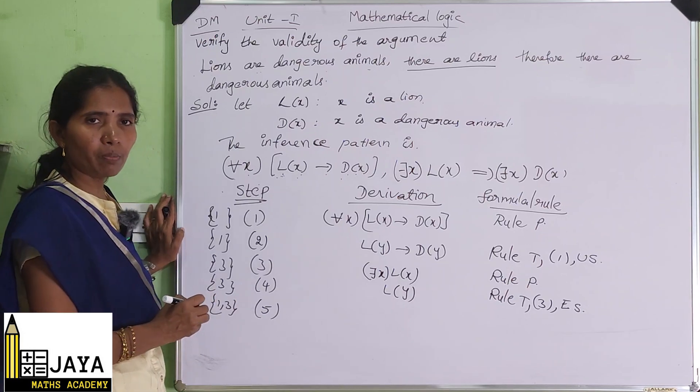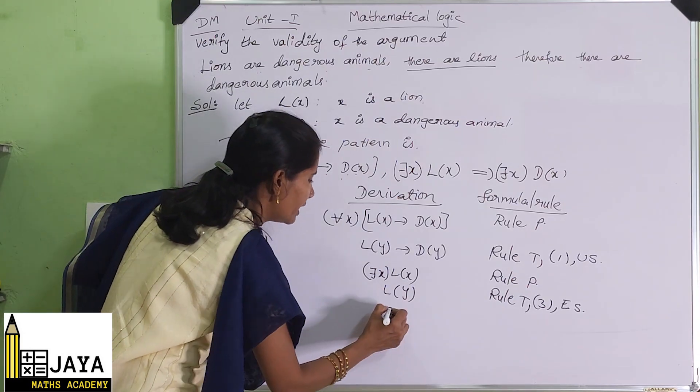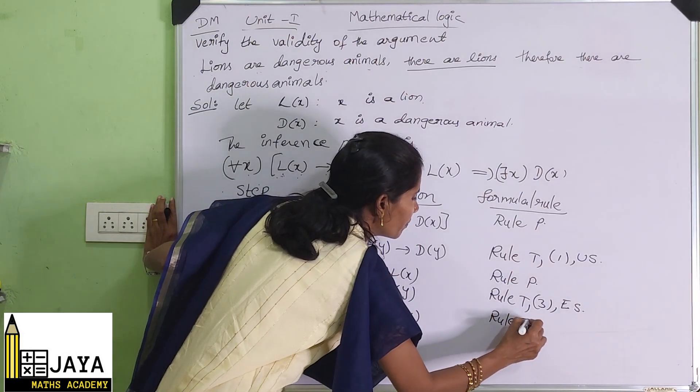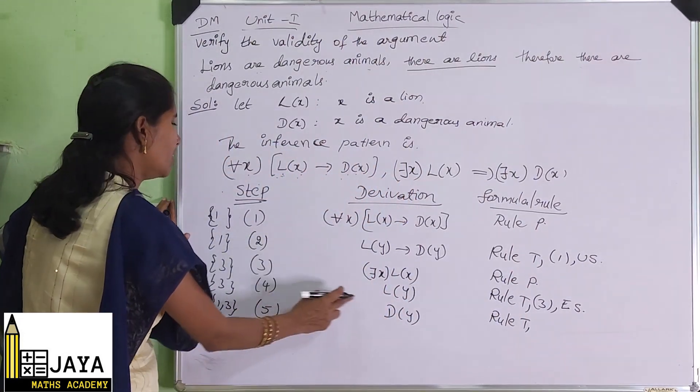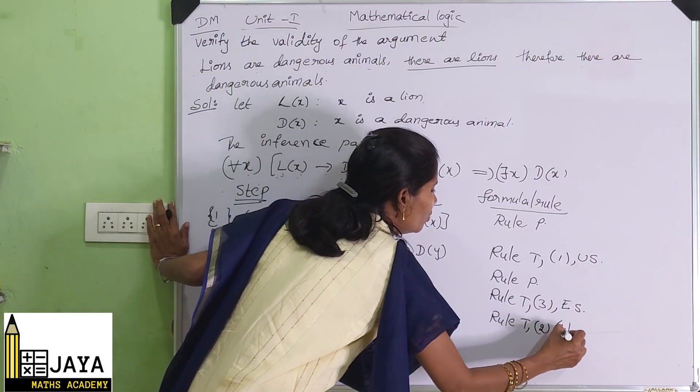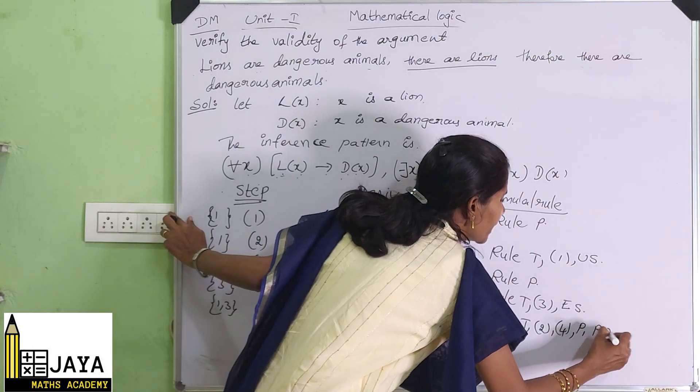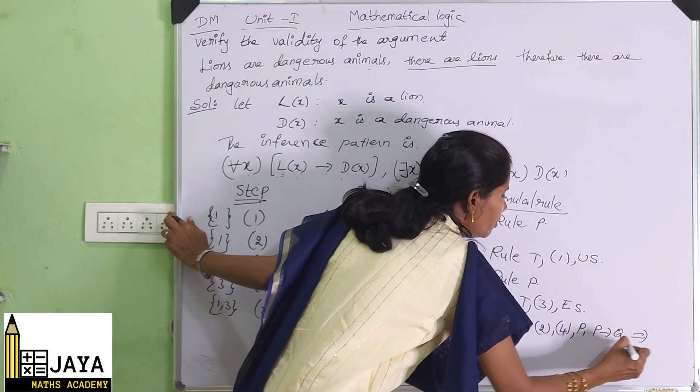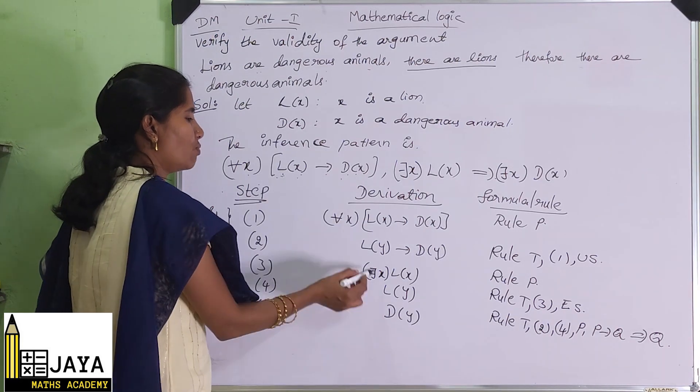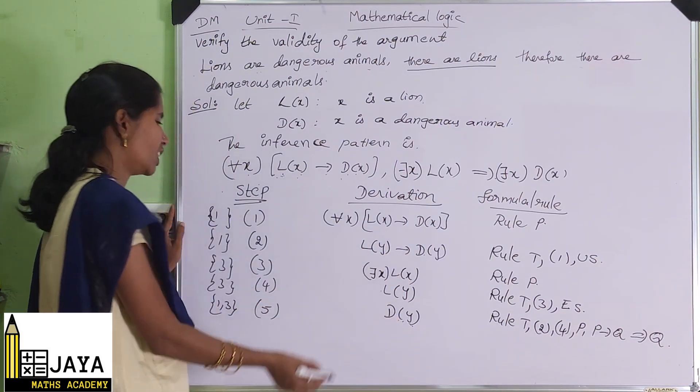Premise number 1 and premise number 3. From these premises, you will get D(y). What rule did we use? P, P implies Q, then we get Q. That rule we used. So D(y): P, P implies Q, that is D(y) you will get. Q you will get.